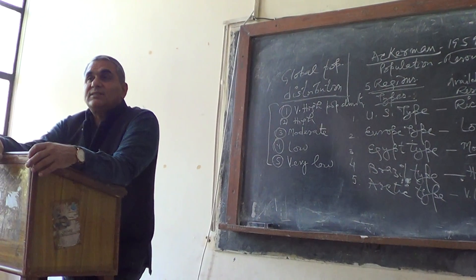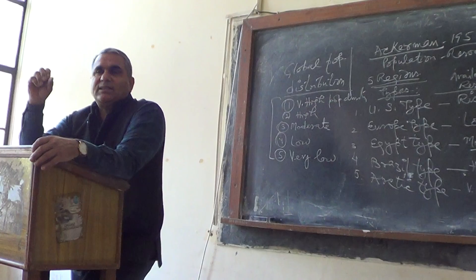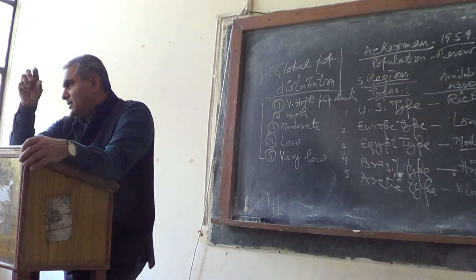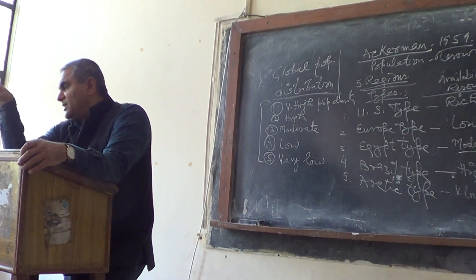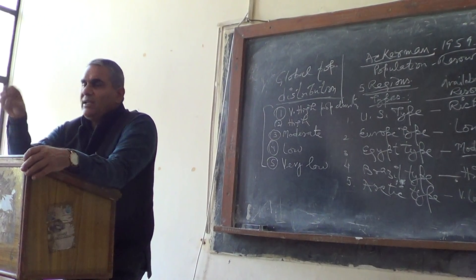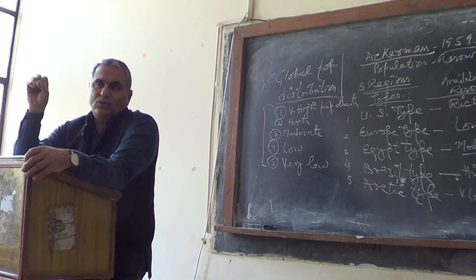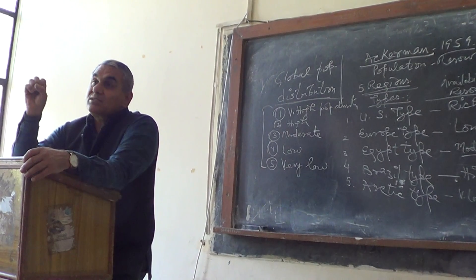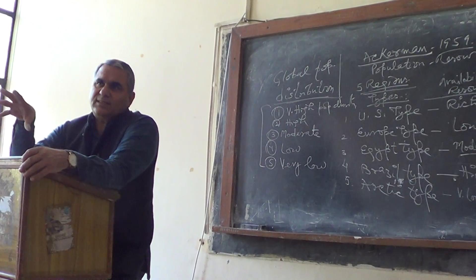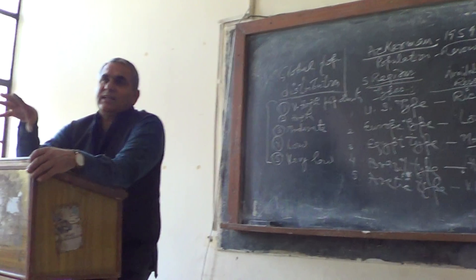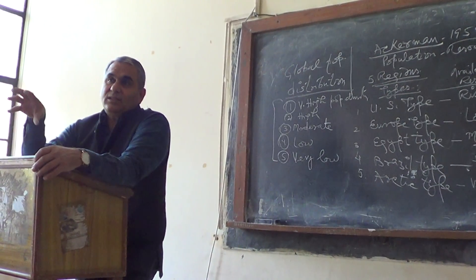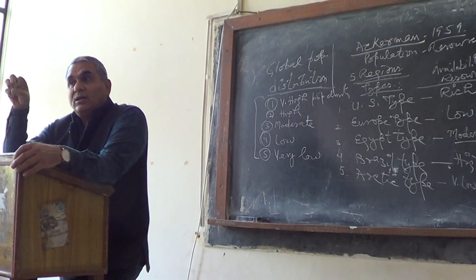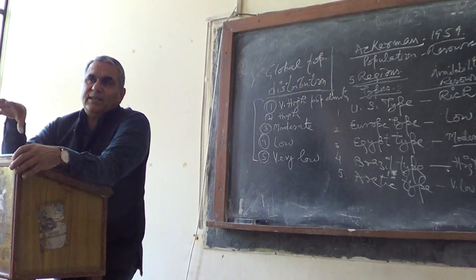All the polar regions — Arctic region, Siberian region, Greenland, and northern Canada — have very low to nil population density. Sahara desert, Arabian desert, and the interior of the Arabian desert, as well as the Iranian desert, also fall into this category.